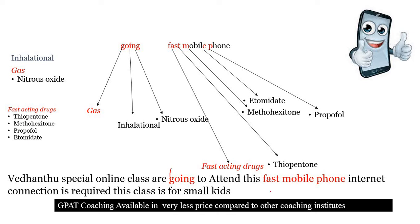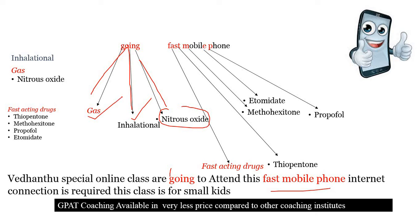From the phrase 'classes are GOING ON', G means Gas, I means Inhalational, and N means Nitrous oxide. So nitrous oxide is an inhalational gas used for general anesthesia.